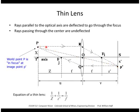If the ray from the point passes parallel to the optical axis, that is deflected, all of those rays are deflected through a point called the focal point.